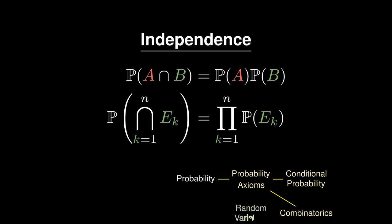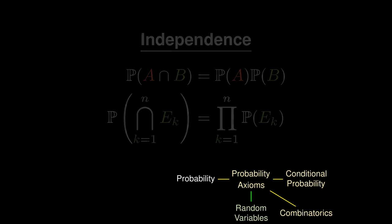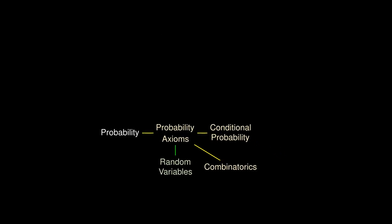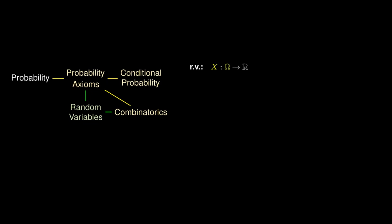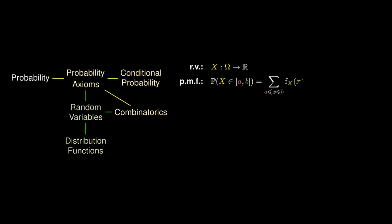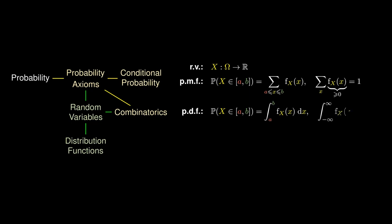Random variables, denoted by X, help us measure the outcome of an experiment. If the random variable takes on discrete values, it is defined by a probability mass function, and if it takes on continuous values, it is defined by a probability density function. In either situation, we can define the cumulative distribution function.